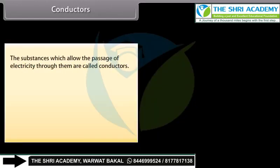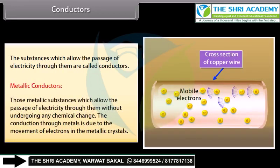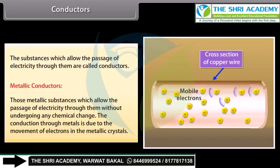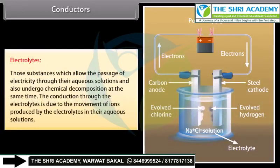Conductors: Substances which allow the passage of electricity through them are called conductors, classified into two categories — metallic conductors and electrolytes. Metallic conductors are metallic substances which allow the passage of electricity without undergoing any chemical change; conduction is due to movement of electrons in metallic crystals (e.g., copper and silver). Electrolytes allow the passage of electric current through their aqueous solutions and undergo chemical decomposition; conduction is due to movement of ions (e.g., acids and bases).